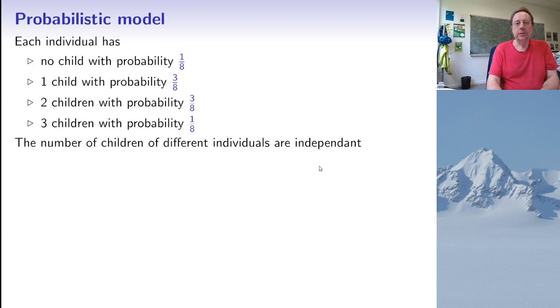So to give a concrete example, let us assume that each individual in our tree has no child with probability 1 over 8, one child with probability 3 over 8, two children with probability also 3 over 8, and three children with probability 1 over 8. Now the numbers here I have chosen are not important, it's just to have an example. The only thing that matters is that the sum of all these probabilities should be 1. And as I said, I assume that the number of children of different individuals are independent.